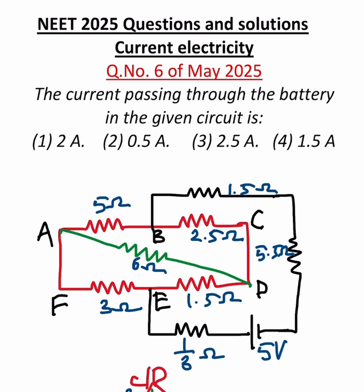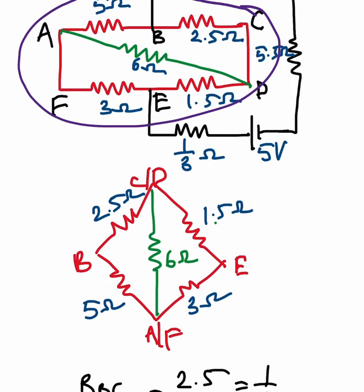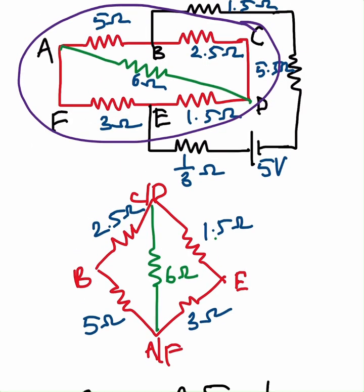What they have given, the middle part of the circuit which I am showing with this violet color, I will redraw it below. Now you can see in the figure given, point A and F are in one place because they are connected by a wire.